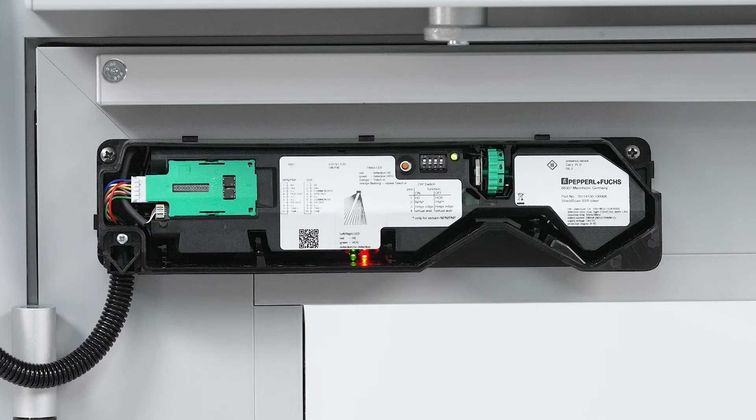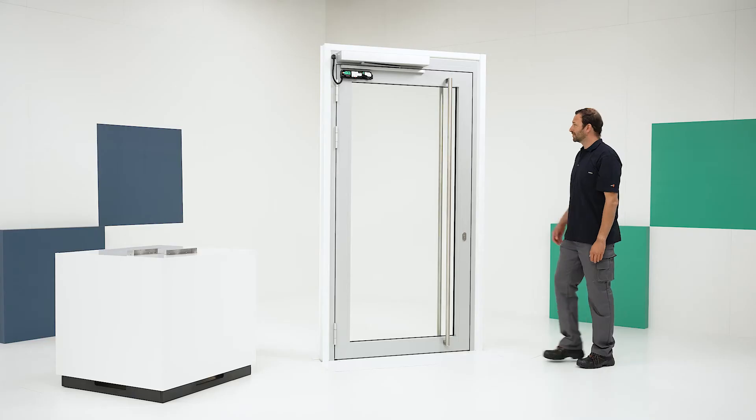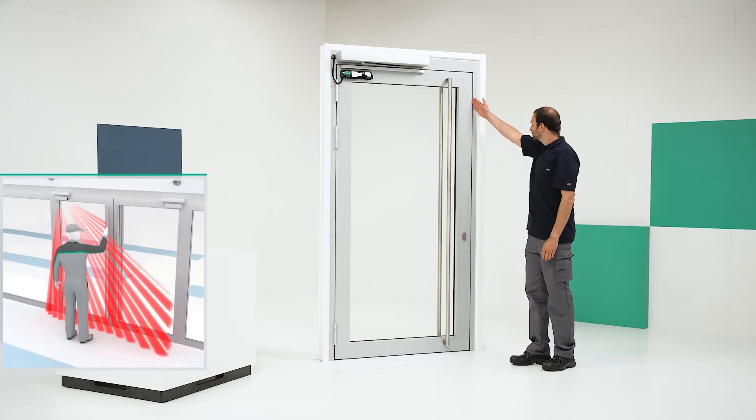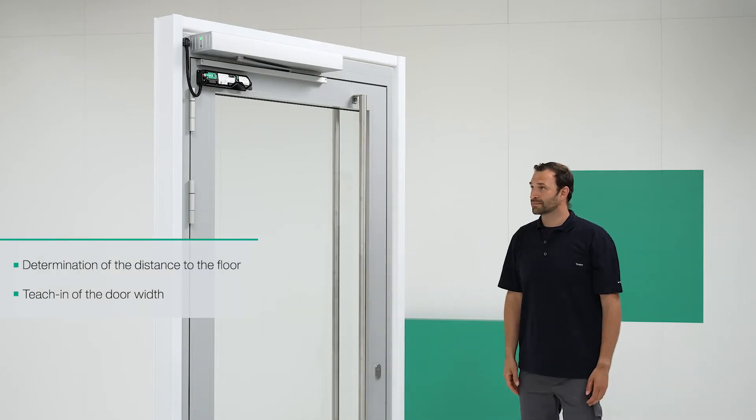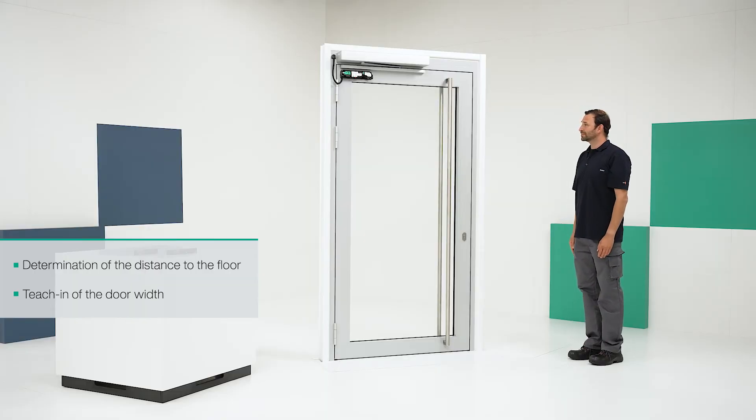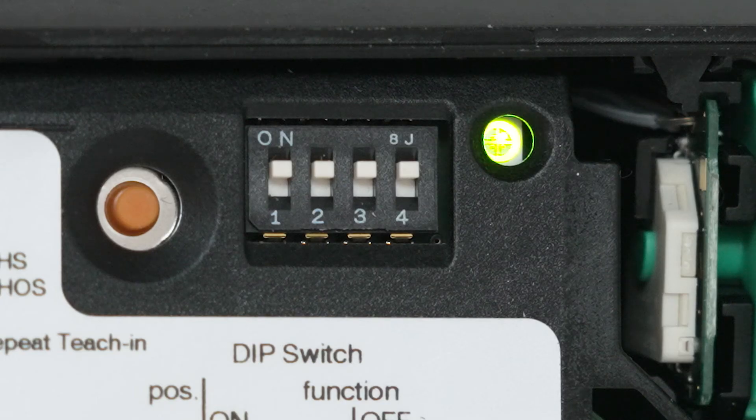When the status LED starts flashing green, perform gesture control within 10 seconds. Gesture control means interrupting the beams with your arm, covering a section of at least 60 cm along the leading edge. Once the gestures have been detected, the status LED will flash red for 2 seconds. As soon as the status LED flashes green again, the output is enabled.